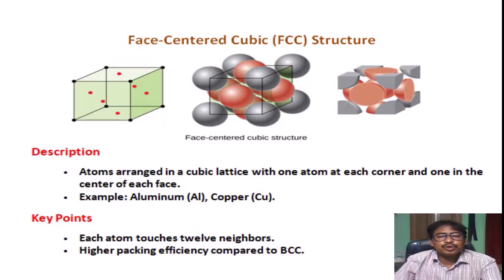Description. Atoms arranged in a cubic lattice with one atom at each corner and one in the center of each face. Example: Aluminum (Al), Copper (Cu). Key Points. Each atom touches 12 neighbors.